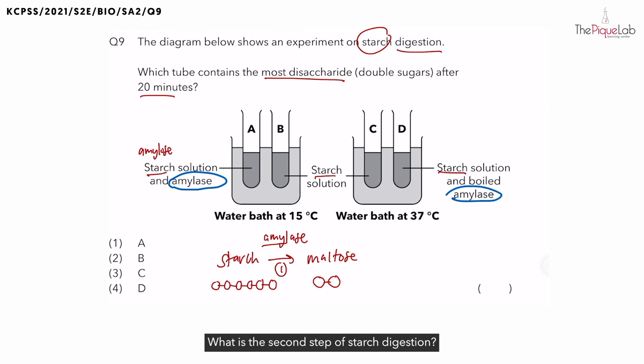What is the second step of starch digestion? Maltose is digested to form glucose, the simple sugars. If I were to use the same symbols to represent a sugar, glucose can be represented by single balls which are not attached to one another. What is the name of the enzyme responsible for step two? Remember the name of the enzyme must end with A-S-E and it needs to match the name of the food. So it will be maltase.